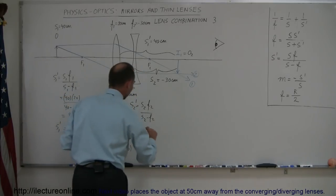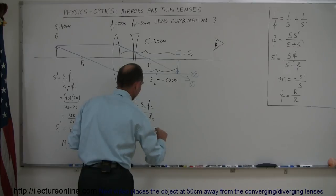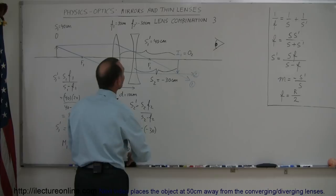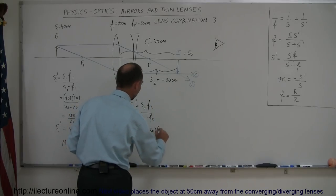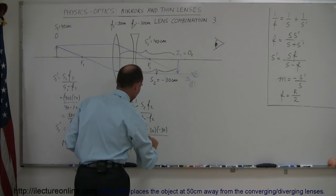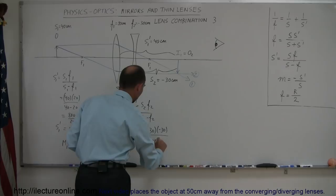So s2 now becomes minus 30, we multiply by minus 30 because that is the focal length of the second lens, divided by minus 30 minus a minus 30.